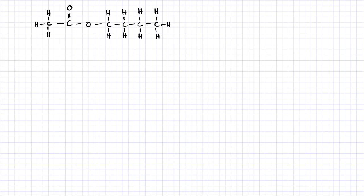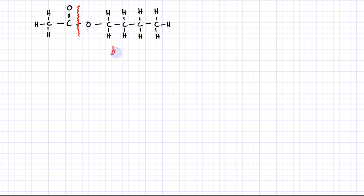We will now try and name this second ester. I'm going to divide this ester into two parts. On one side I have four carbon atoms — one, two, three, and four — so the name should start with 'bute.' On the other side the number of carbon atoms is two, so the name is going to start with 'eth.'